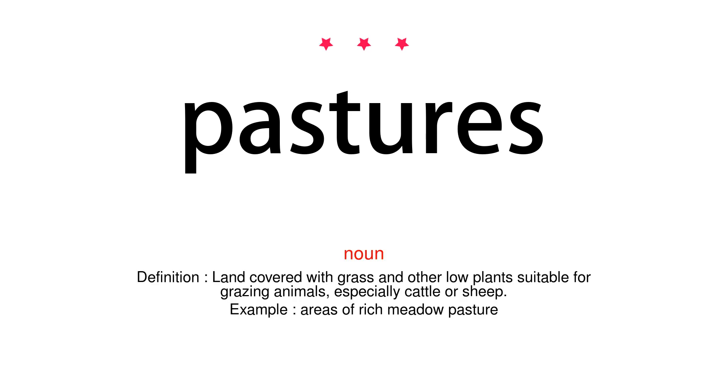Pastures. Noun. Definition: Land covered with grass and other low plants suitable for grazing animals, especially cattle or sheep. Example: Areas of rich meadow pasture.